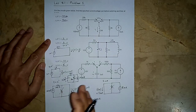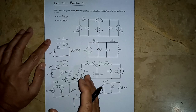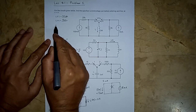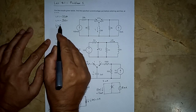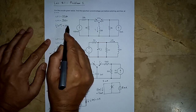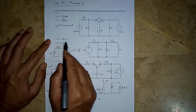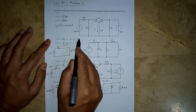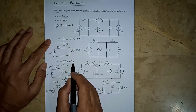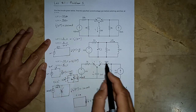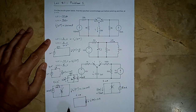Finding these initial and final values is essential. A key observation: IL(0+) equals IL(0−) because inductor current cannot change instantaneously. Similarly, VC(0+) equals VC(0−). We need these values because of the general solution formula for any current or voltage x(t) in the circuit after switching.